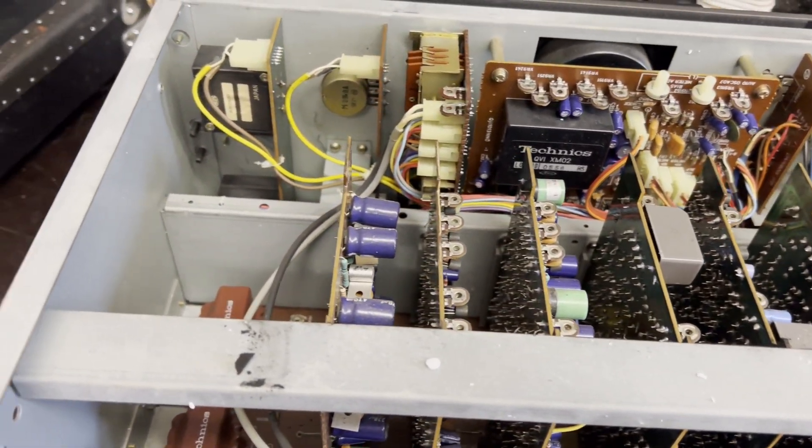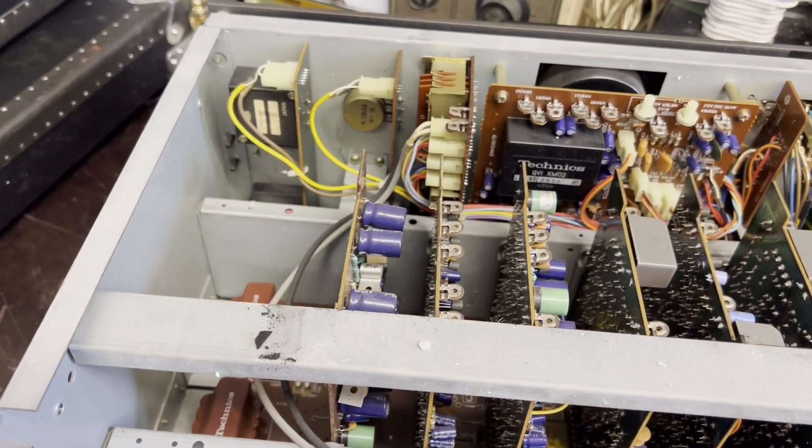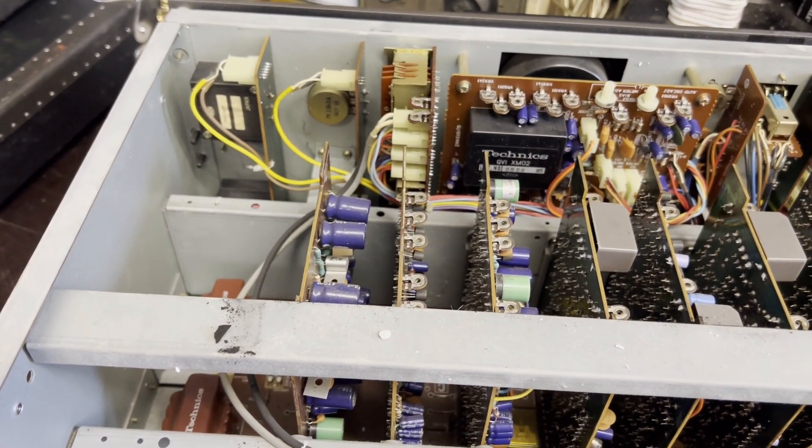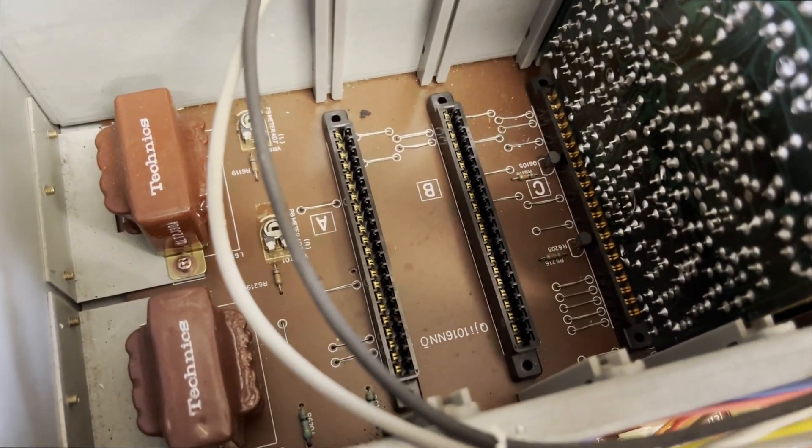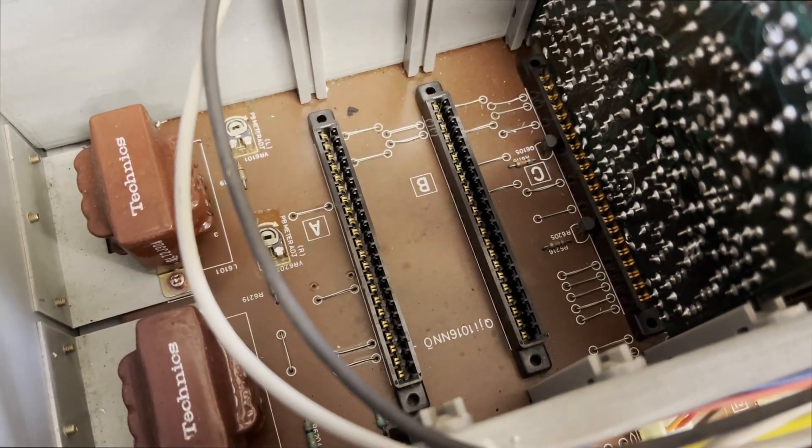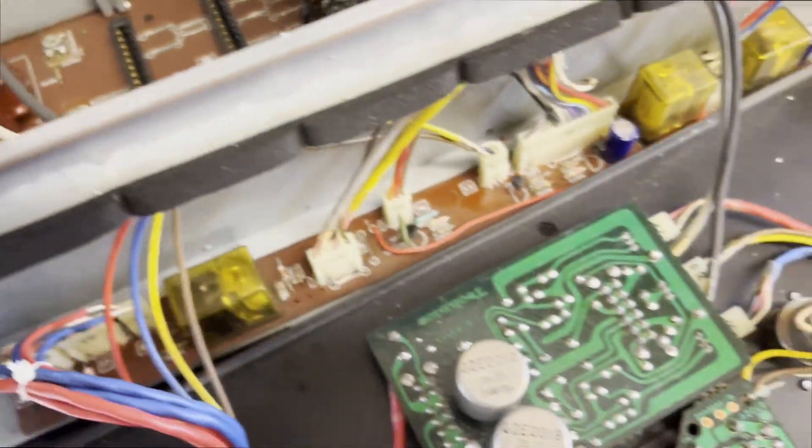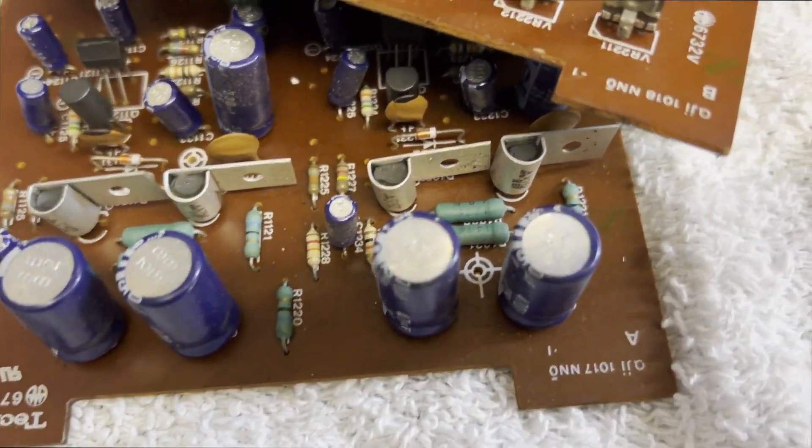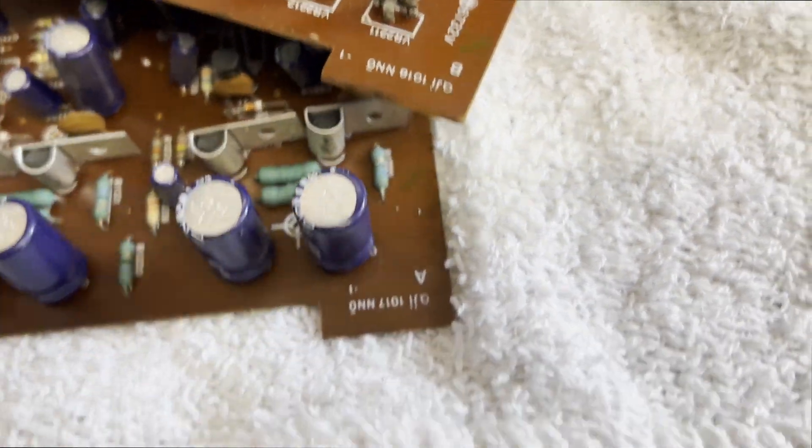So we'll continue to show you how things go with the record play amp. You can see how nicely the thing is laid out so the boards can plug in and out. Everything on these Technics machines is all labeled with numbers or letters, like you can see the A and the B, and it makes it real easy to find bad caps.